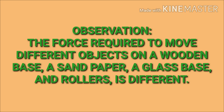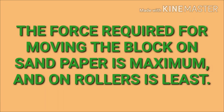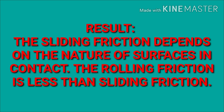The force required to move the wooden block is different on different surfaces: a wooden base, sandpaper, a glass base, and rollers. The force required for moving the block on sandpaper is maximum and on rollers is least. Result: The sliding friction depends on the nature of surfaces in contact, and rolling friction is less than sliding friction.